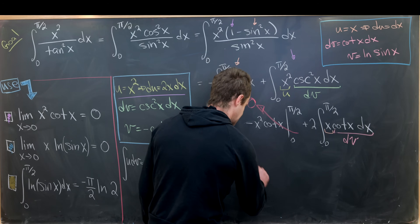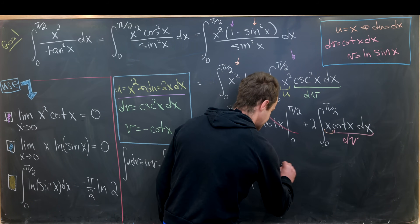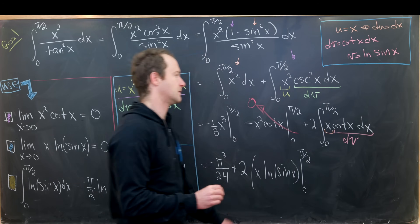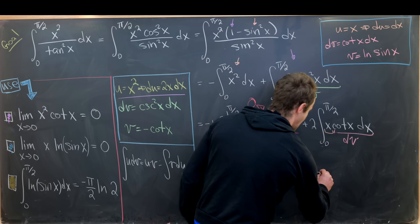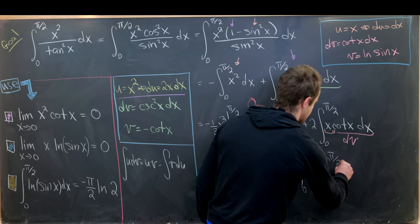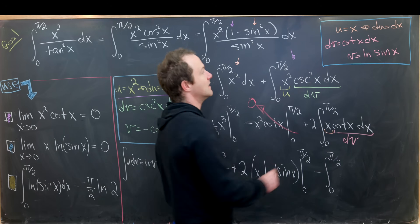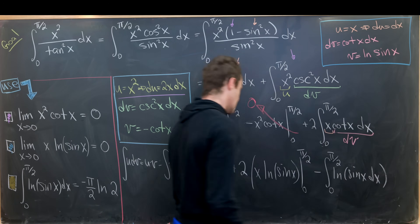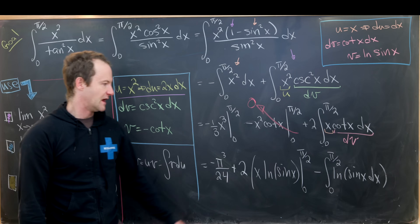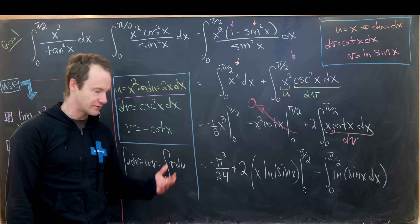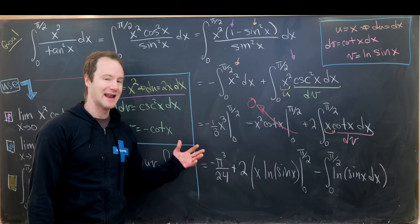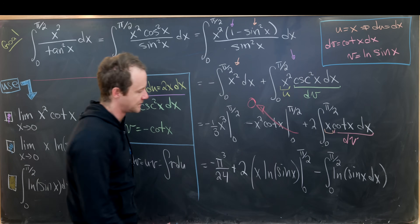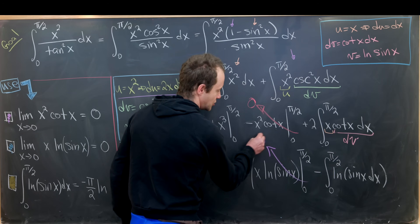Evaluating x·ln(sin x): at x = π/2, ln(sin(π/2)) = ln(1) = 0. At x = 0 we need a limit — this is exactly the second limit we proved earlier, which equals 0. So the entire boundary term vanishes, leaving minus ∫₀^{π/2} ln(sin x) dx.